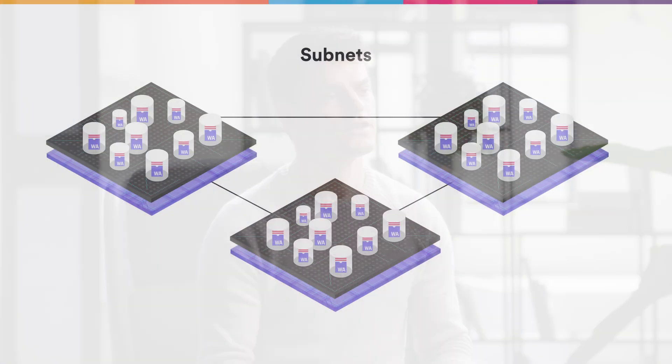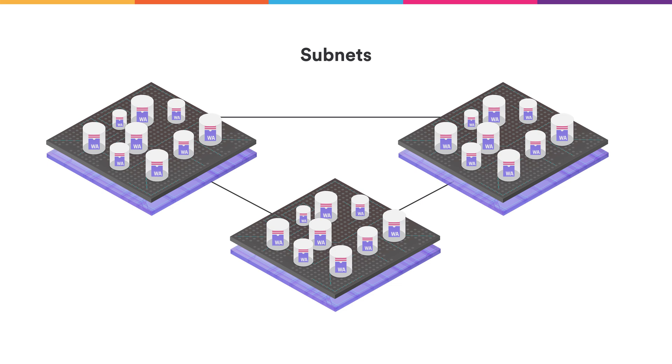Additionally, we want the internet computer to scale, meaning we can run more and more canisters on the internet computer — it can grow its capacity. To achieve these goals, we have what we call subnets. We split the canisters into smaller groups and each group will run on a subnet. We can always add subnets to the internet computer, thereby growing its capacity.